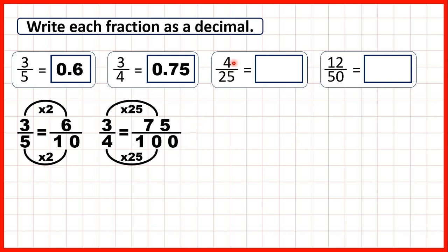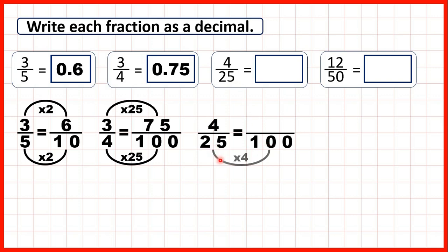Now we have four over twenty-five. One hundred is a multiple of twenty-five, and twenty-five times four is a hundred. What we do to the denominator, we do to the numerator as well, and four times four is sixteen. The denominator of a hundred tells us we need two digits after the decimal point, so we write sixteen hundredths as 0.16, with the one moved over to the tenths.